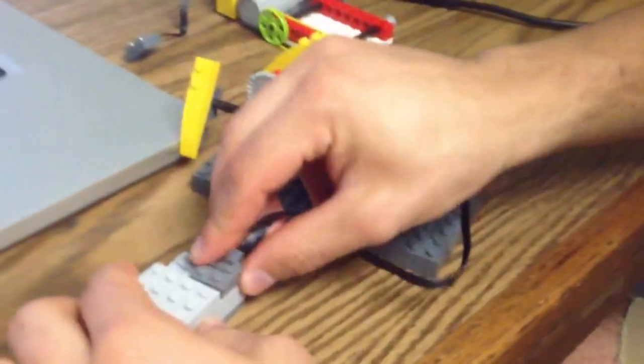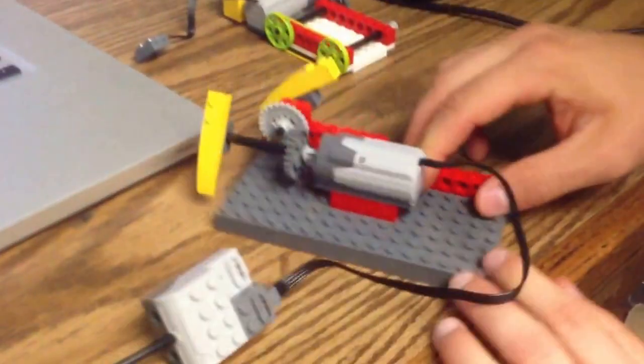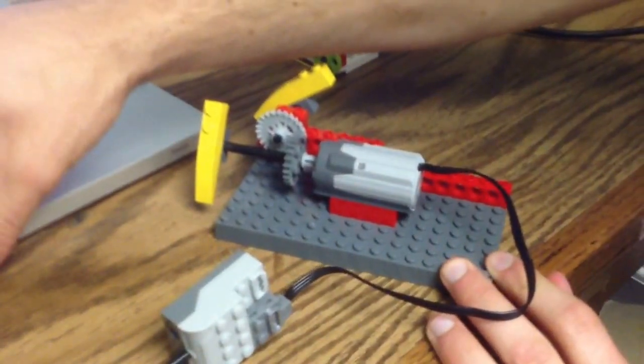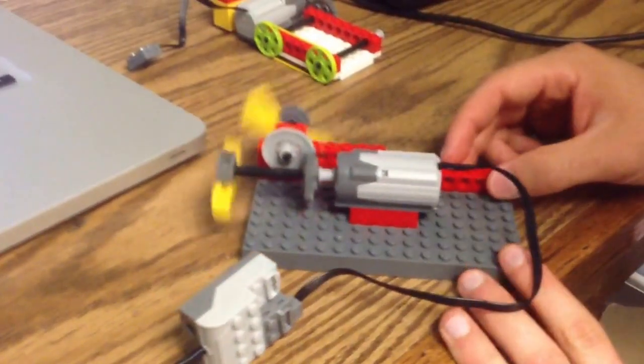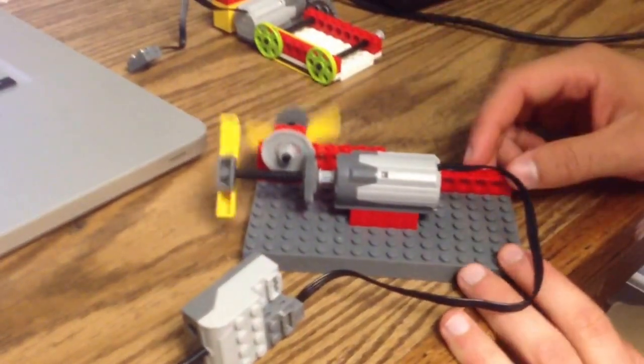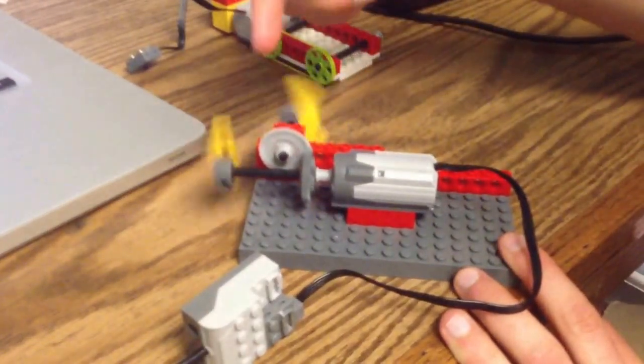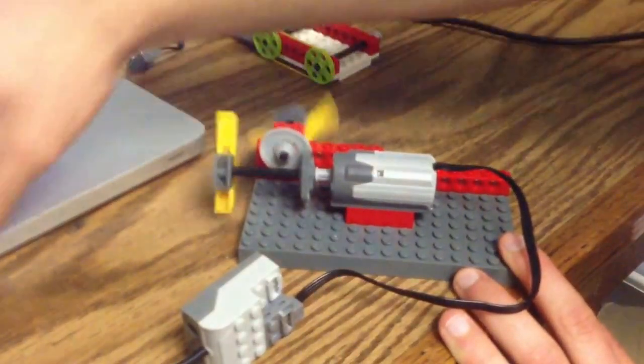So again, we just plug the motor onto the brick. Press play. And voila! Note that crown gears are a little less robust sometimes. So it's good to really reinforce them as we've done here.